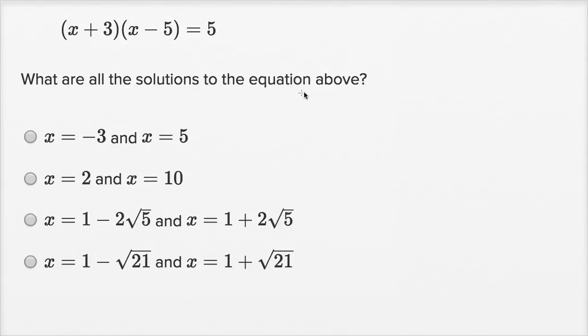What are all the solutions to the equation above? We have (x + 3)(x - 5) is equal to 5.